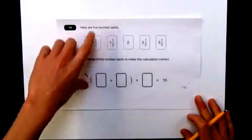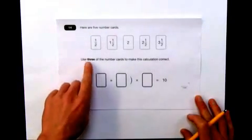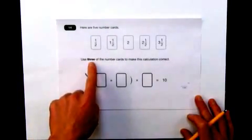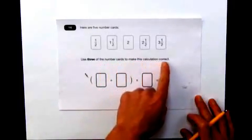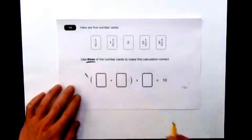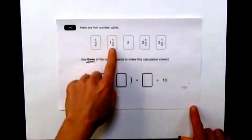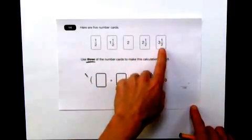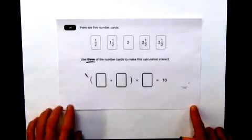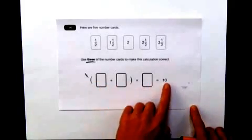Here are five number cards. Use three, and it's in bold, use three of the number cards to make this calculation correct. So I can only use three of these cards. If we have a look at the cards themselves, four of them contain fractions, so that means it's not going to be easy. I need to use three of them to make ten.